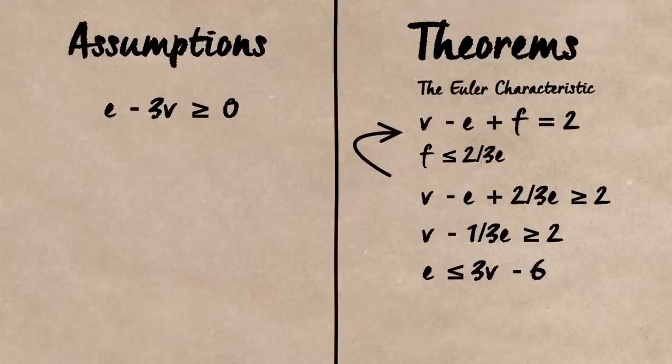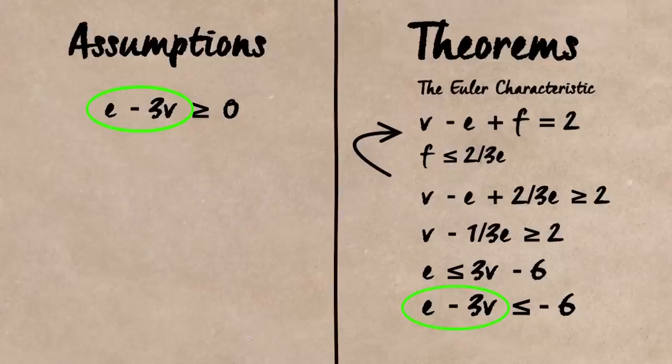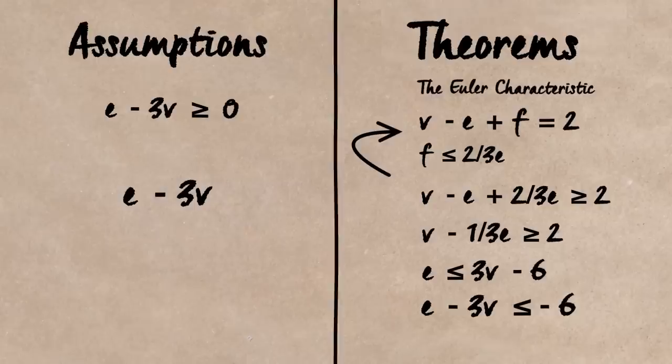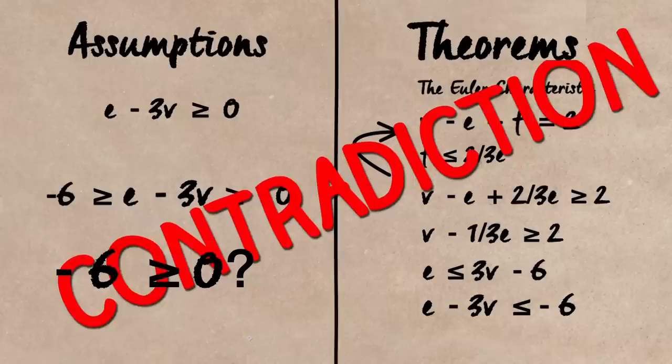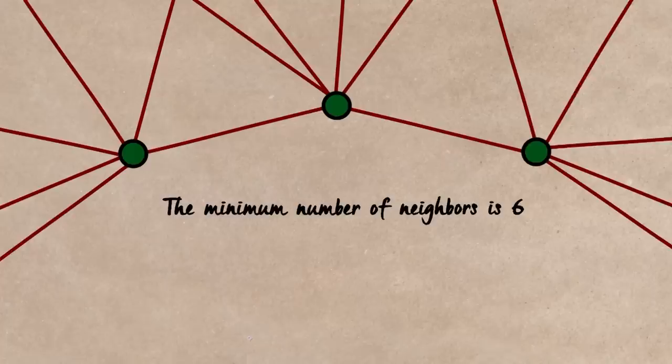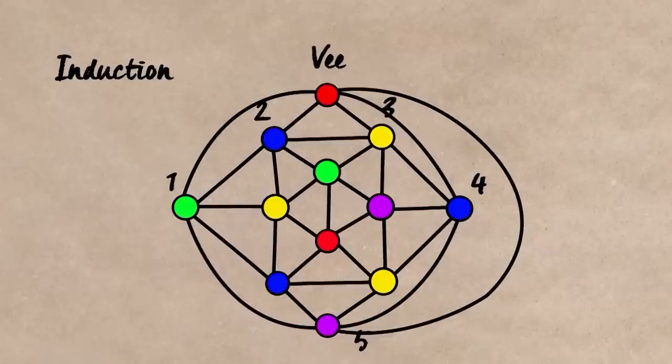The term E minus three V on the left is the same. So we can write these two equations as one inequality. So then we get that the number of edges minus three times the number of vertices must be smaller than minus six from our theorem, but must be greater than zero from our assumption. This is a contradiction. Therefore, our assumption that the minimum number of neighbours is six is wrong. The vertex with the minimum number of neighbours is five or less. So that means our proof by induction is safe.